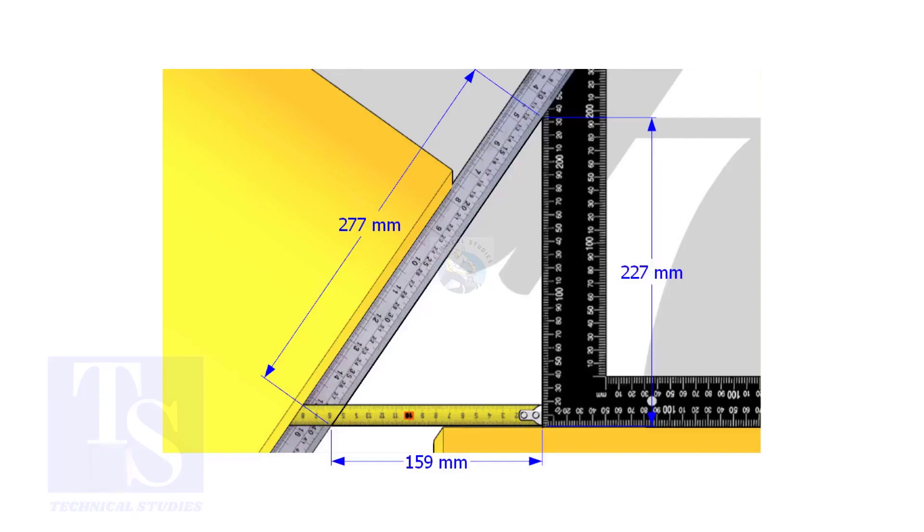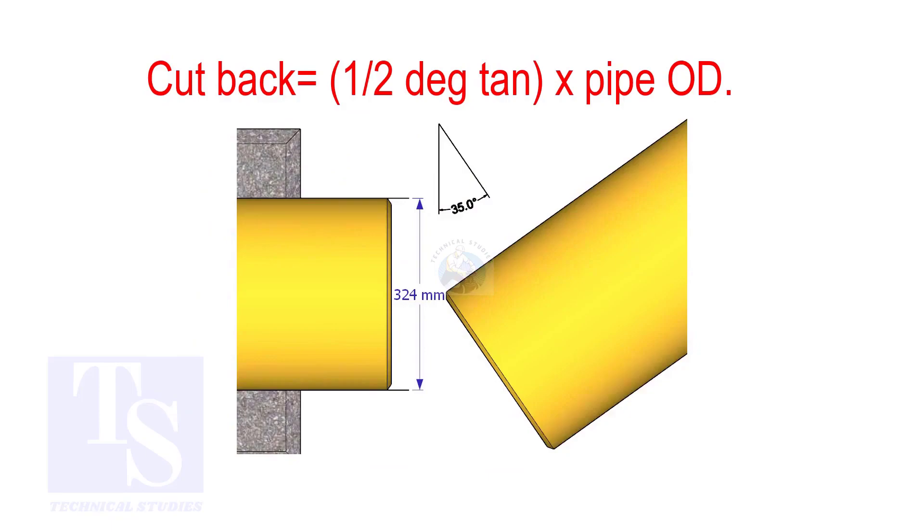How to calculate the cutback of a single cut miter. When it is a single cut, the cutback is half degree tan multiplied by the OD of the pipe.